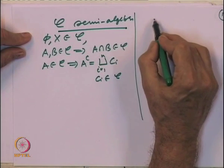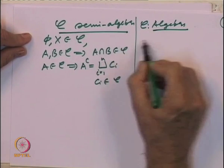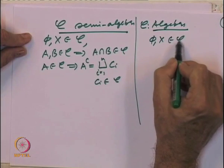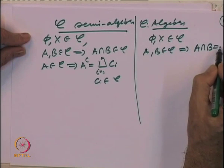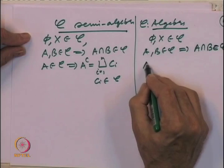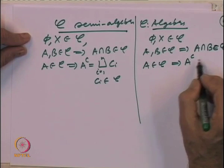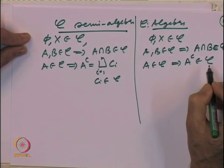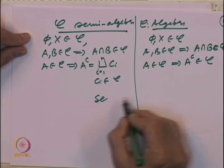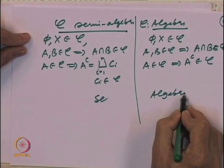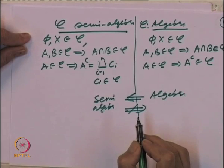Then we defined what is called an algebra. A collection C is called an algebra if: the empty set and the whole space belong to C; A and B belonging to C implies A ∩ B belongs to C (closed under intersections); and A belonging to C implies the complement of A also belongs to C. This last property is stronger — in a semi-algebra, the complement is only representable, but in an algebra it must actually belong to C. So algebra implies semi-algebra, but the converse need not be true.